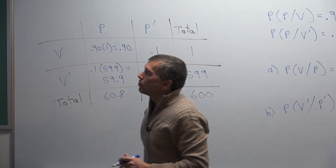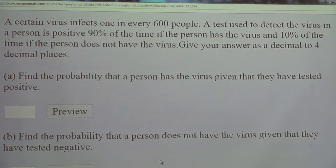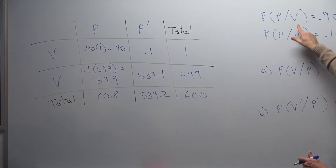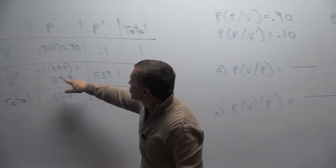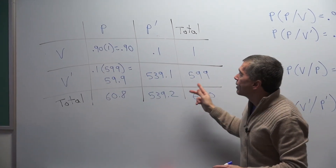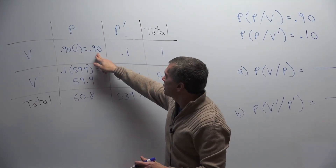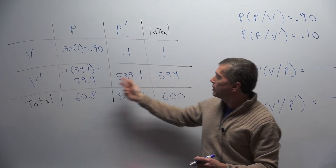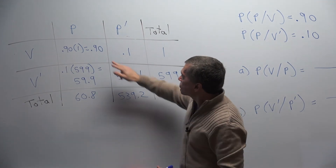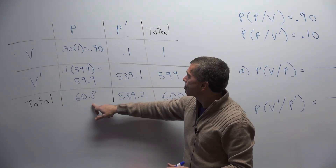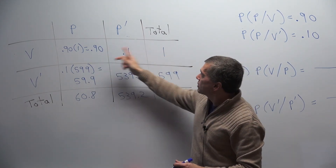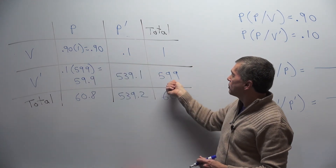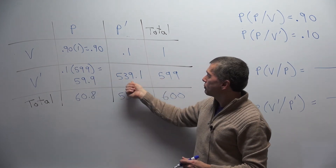The test is also positive 10% of the time if the person does not have the virus — positive 10% of the time given the person does not have the virus. So we take 10% times 599, which gives 59.9 for the positive/no-virus cell. We take 90% times 1 = 0.9, and 10% times 599 = 59.9. Then we do subtraction to fill in the missing blocks: if this is 1 and 0.9, the remaining cell is 0.1; if this is 599 and 59.9, subtracting gives 539.1.